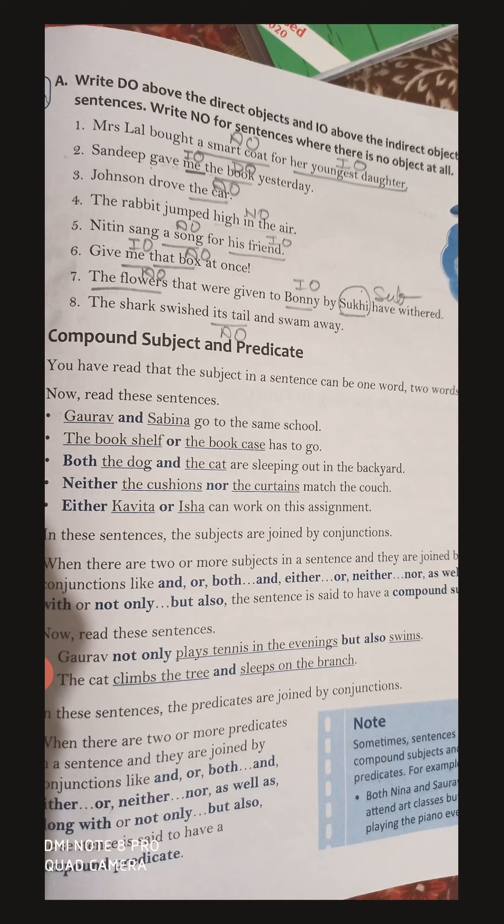In sentence eight, 'its tail' is your direct object because 'it switched its tail' — switched means moved into the air. 'And swam away' is not an indirect object. Objects must always be a noun, and 'swam away' is not a noun — it is an action. So sentence eight has only a direct object.